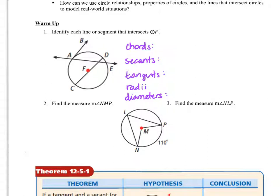Segment CD looks like it might be a diameter, but it's a little bit off-center, so we're going to say it's not. We definitely don't have any radii. In terms of chords, there are two that we can list: segment AE and segment CD.